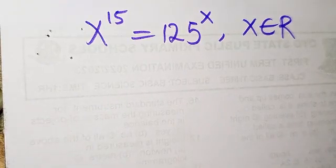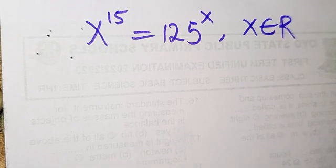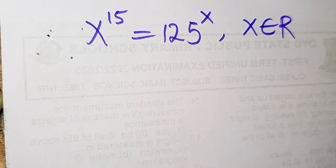Hello viewers, you are highly welcome. In today's tutorial we are going to be solving this beautiful equation: x to the power 15 equals 125 to the power x, where x belongs to the set of real numbers. We are going to have two possible solutions — one will be an integer and one will be a decimal — and both belong to the set of real numbers.